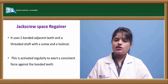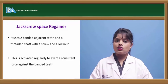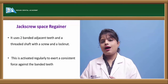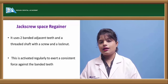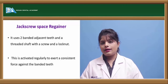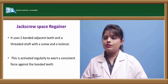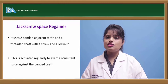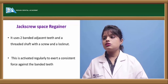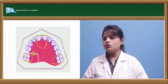In the jack screw space regainer, two molars are banded and after band fitting, buccal tubes are attached to the bands. A lock and screw with a threaded shaft are placed inside. By activation of the screw, the space which is lost can be regained. This is the jack screw space regainer.